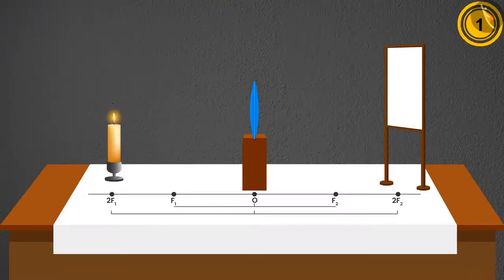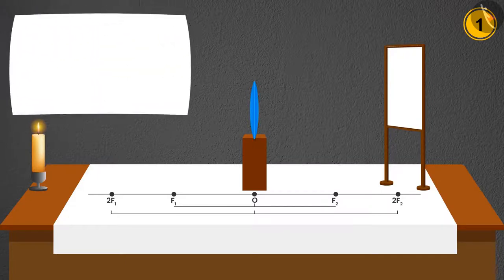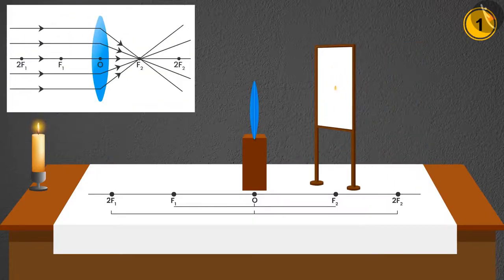Case 1: If the candle is placed at infinity, the light coming from the candle will be parallel to the main axis and after refraction, the image will be formed at F2. The image will be highly diminished or point-sized as well as real and inverted.